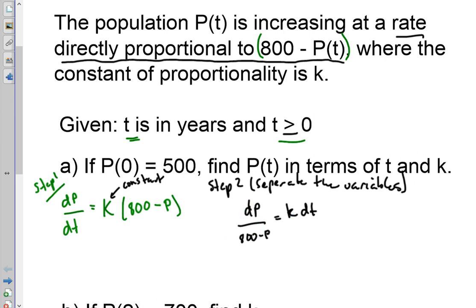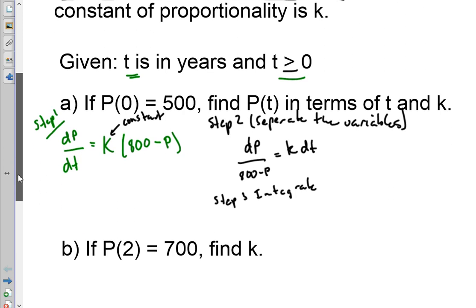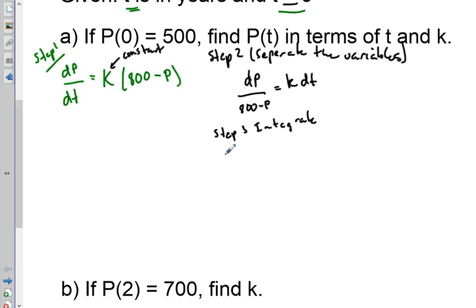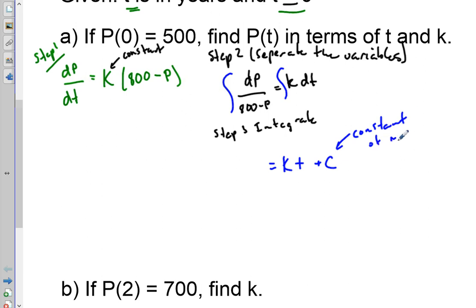Step three is to integrate. We integrate both sides of the equation. On the right side, K is a constant, so the integral gives us KT plus C — that's our constant of integration. When you integrate both sides, you only need one constant of integration.